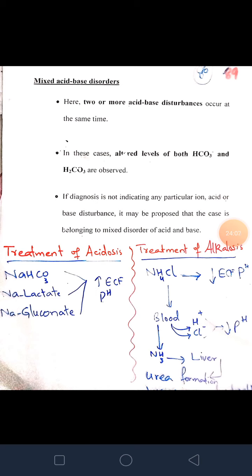Mixed acid-base disorder involves both disturbances simultaneously. If bicarbonate ion is decreased it is metabolic acidosis; if carbonic acid is increased it is respiratory acidosis; if both variations are present, the patient has mixed acidosis. If bicarbonate is increased it is metabolic alkalosis; if carbonic acid is decreased it is respiratory alkalosis; if both are present it is mixed alkalosis. Mixed acid-base disorder involves decrease in both bicarbonate ion and carbonic acid.